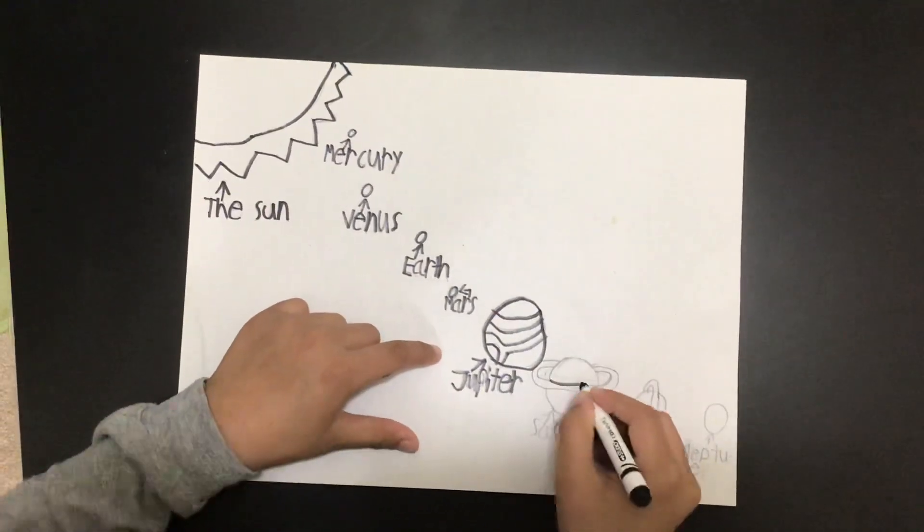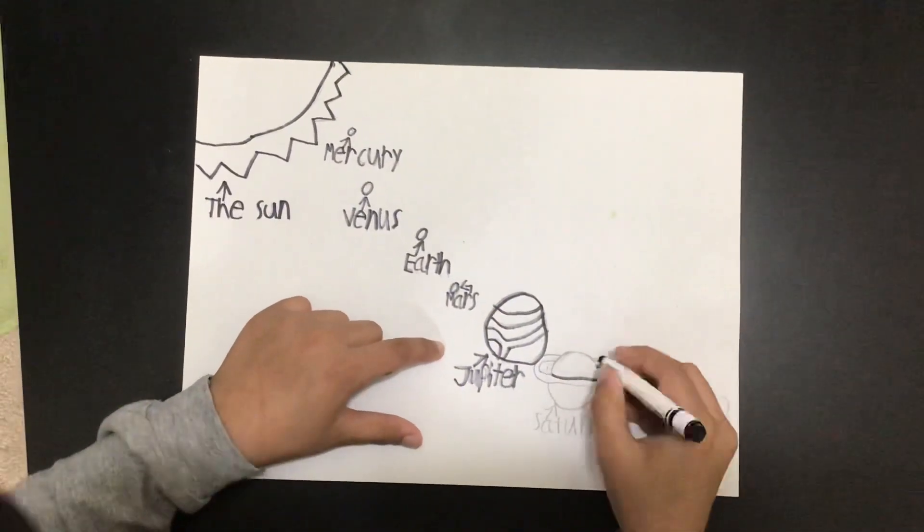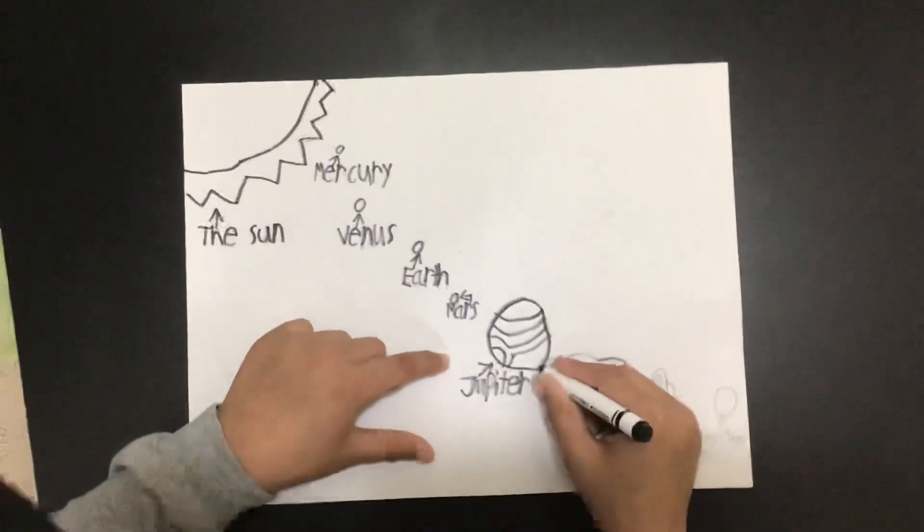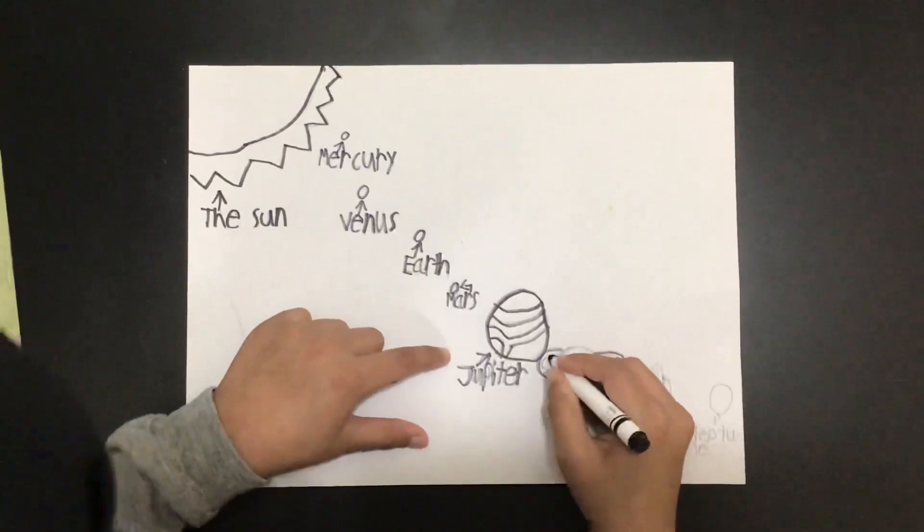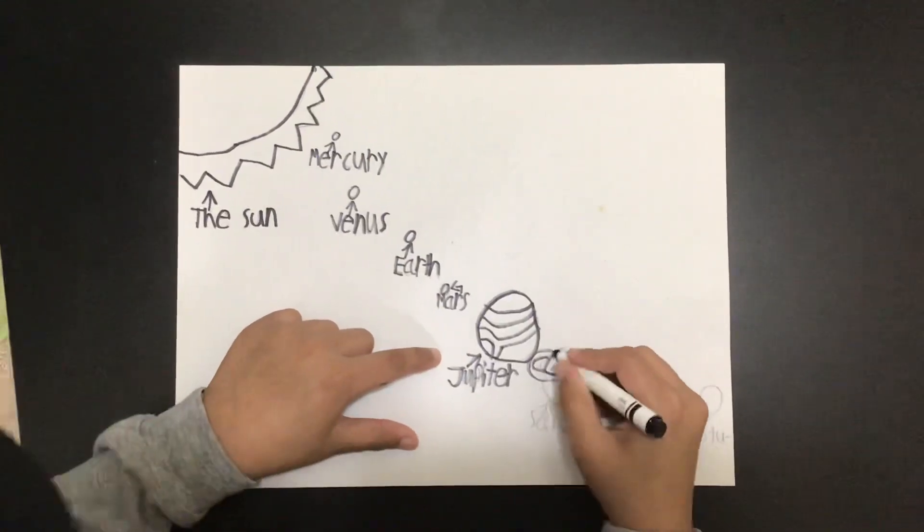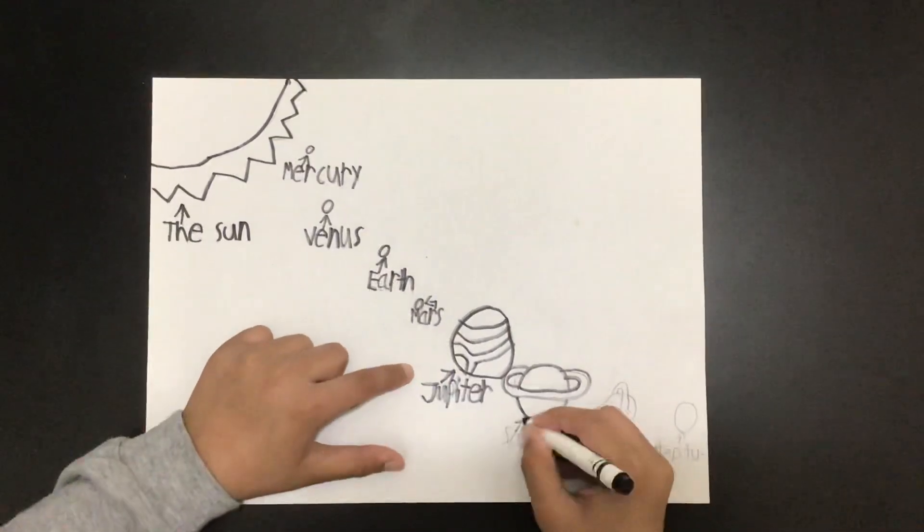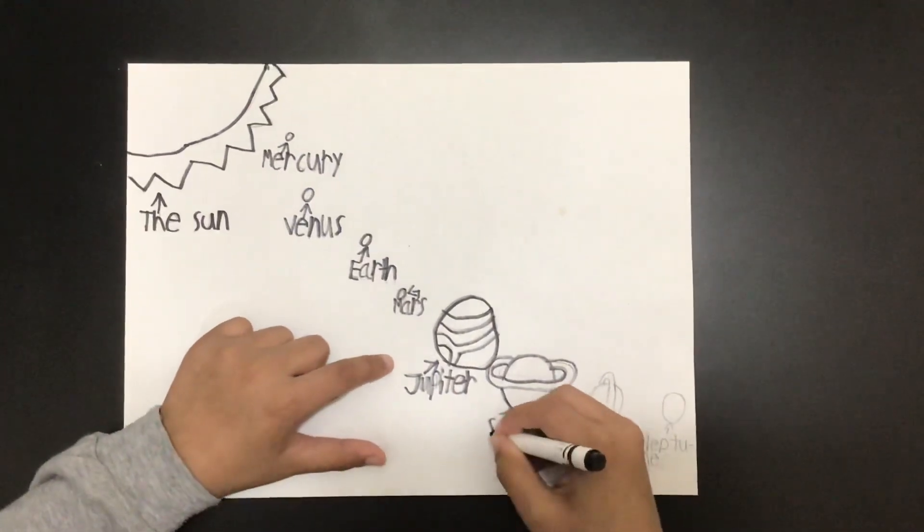This is the planet with wings. Its name is Saturn. Its wings are made of dust and ice. And it is the second biggest planet from the sun.